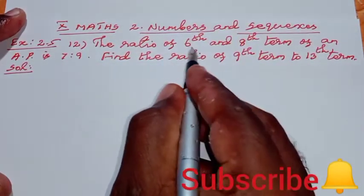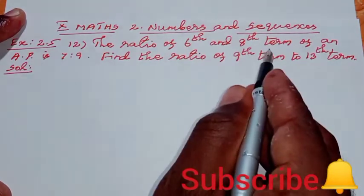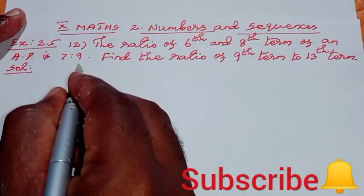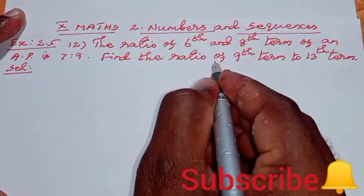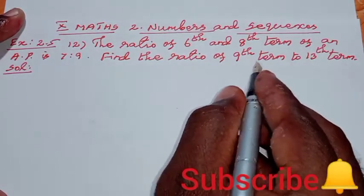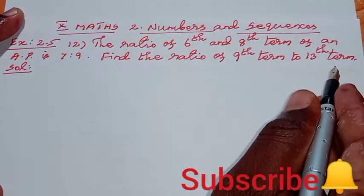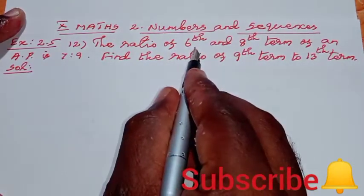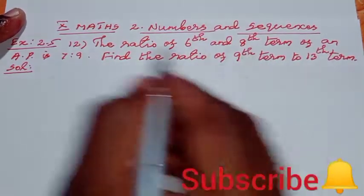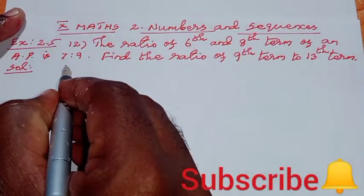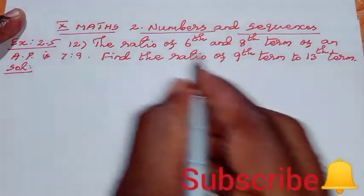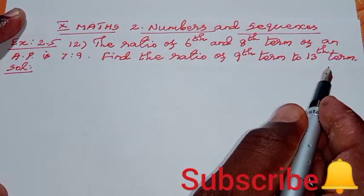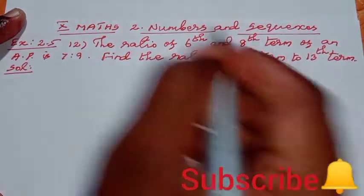See the question: the ratio of 6th and 8th term of an AP is 7 is to 9. Find the ratio of 9th term to 13th term. What is given? One AP, and 6th term to 8th term is 7 is to 9.